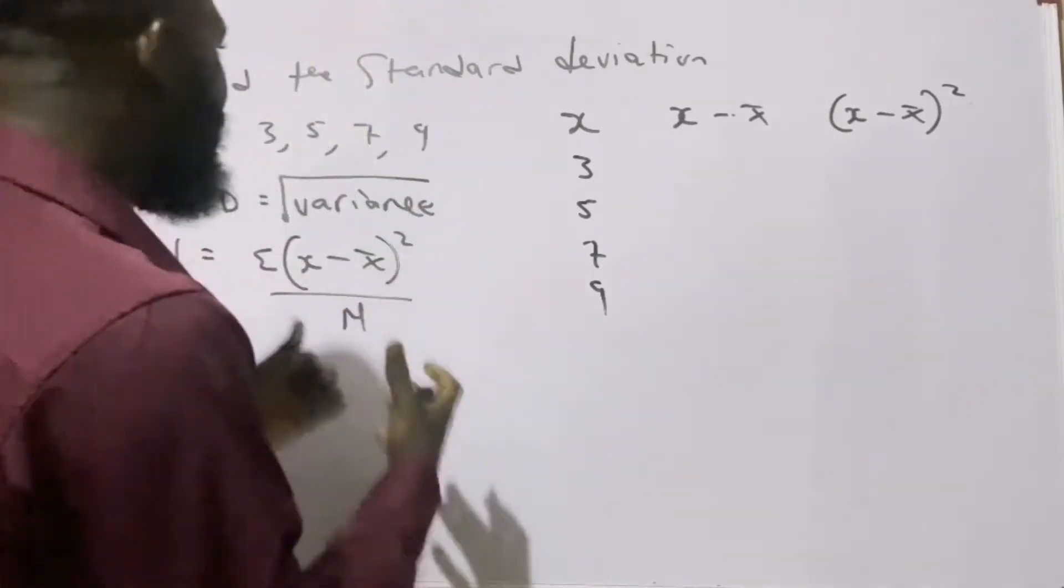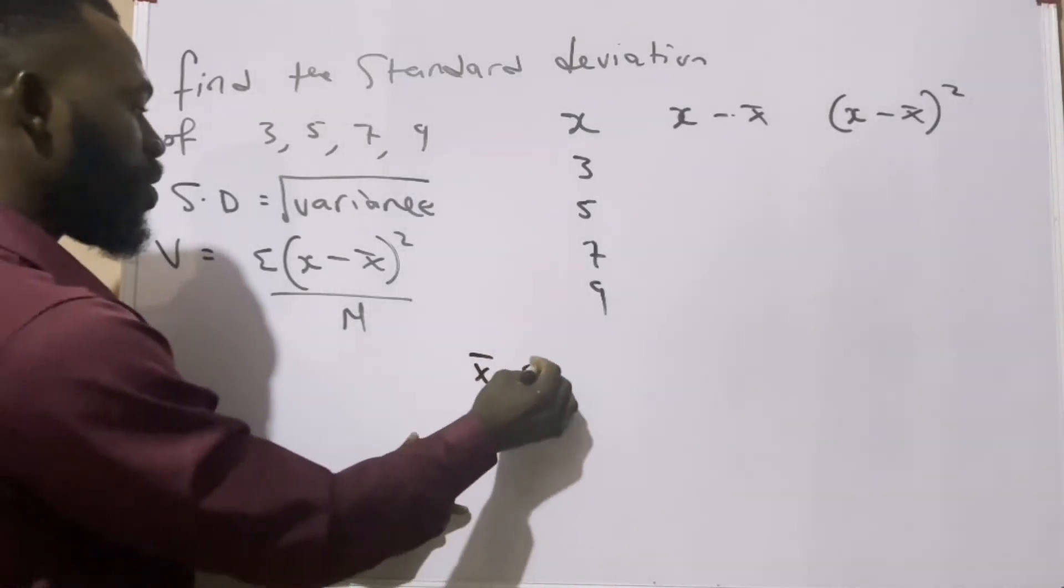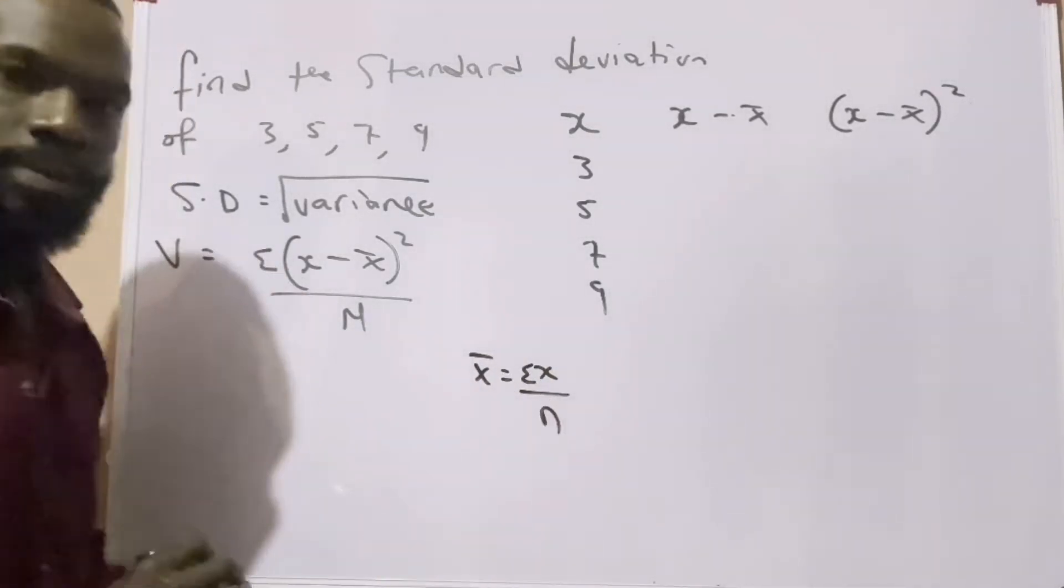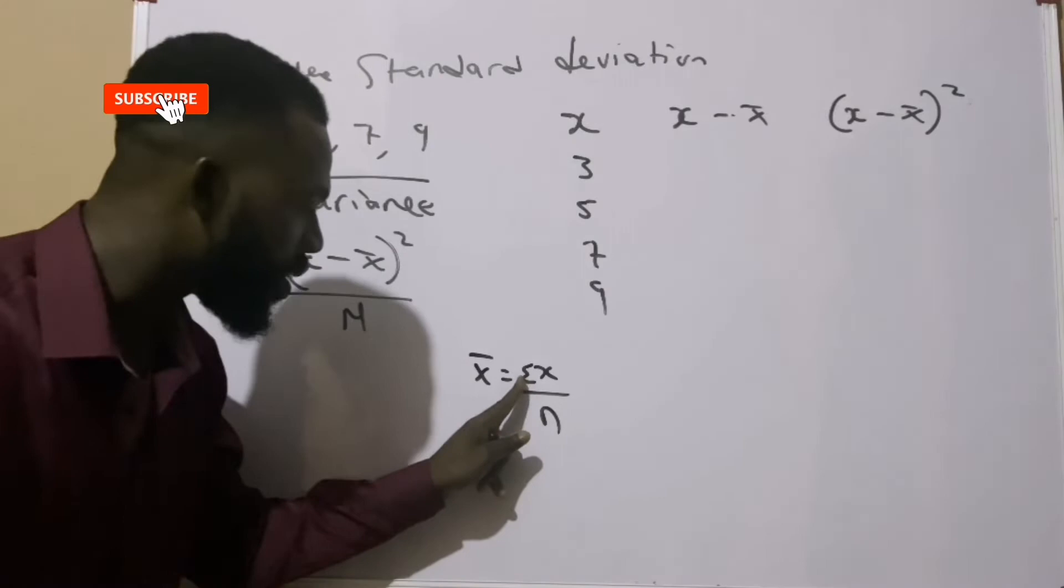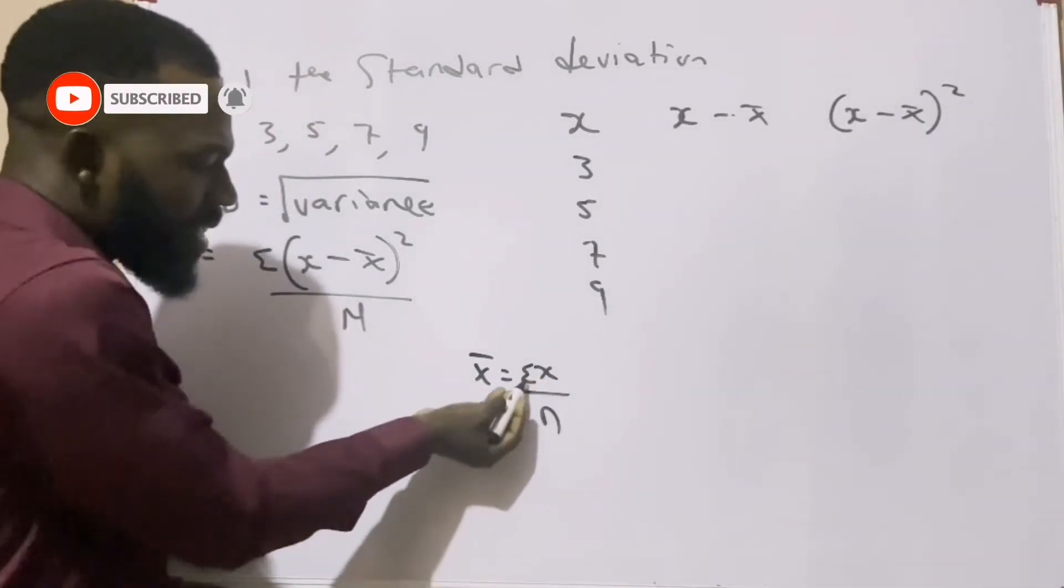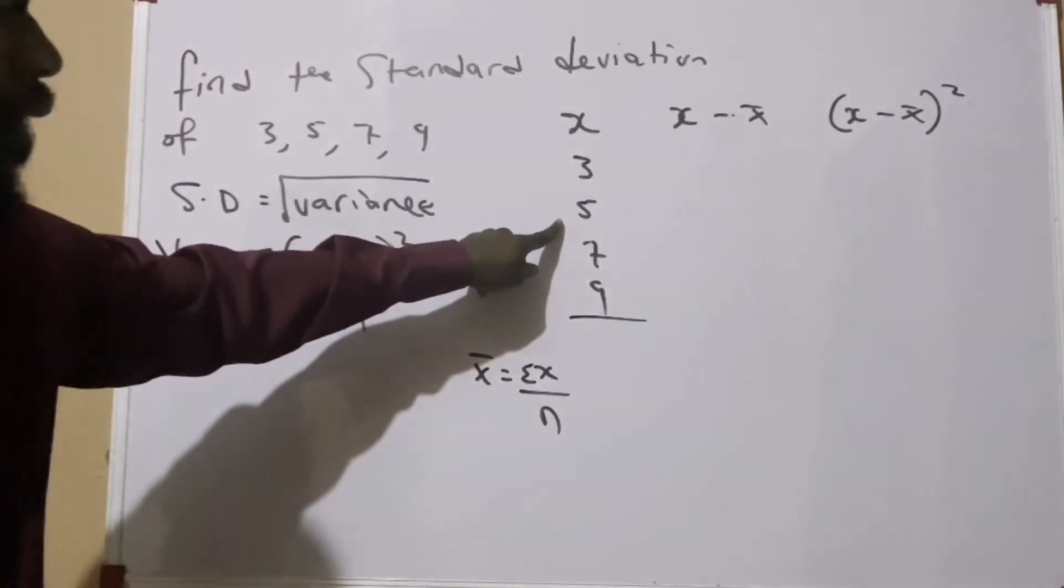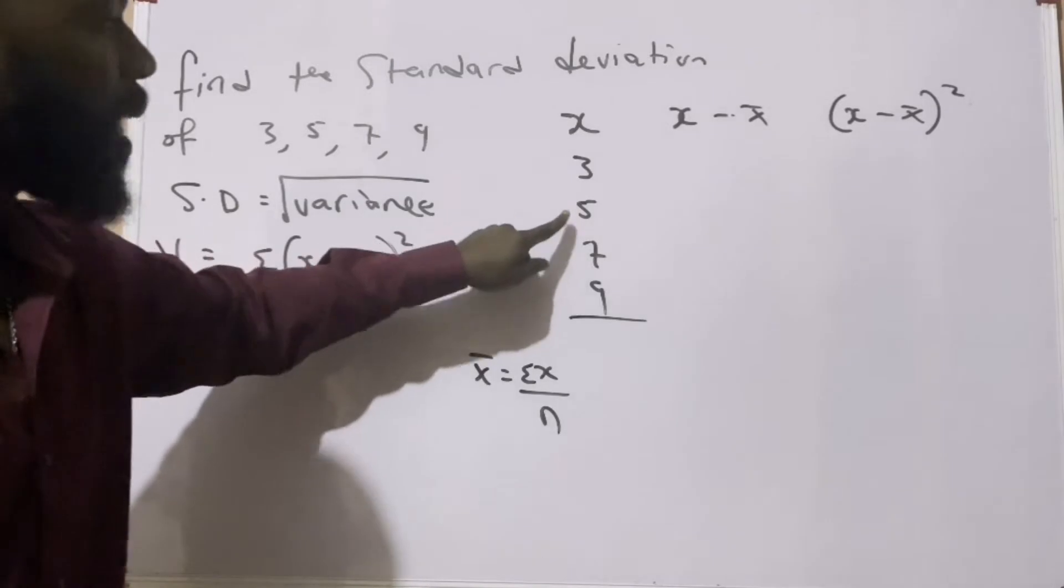Now the formula for solving mean when there is no frequency is: mean equals sigma x over n. Now what does sigma mean? Sigma means summation. Now when we say sigma x, it means add x. Now let us look for x.